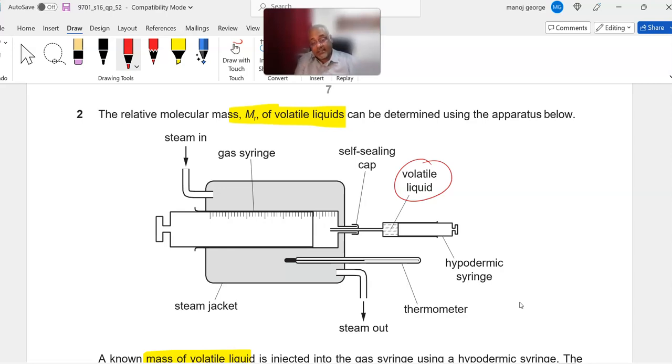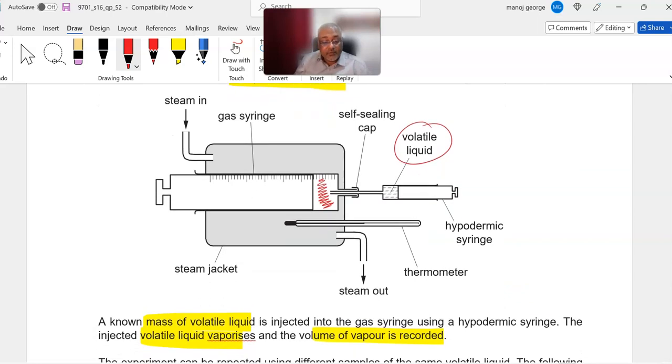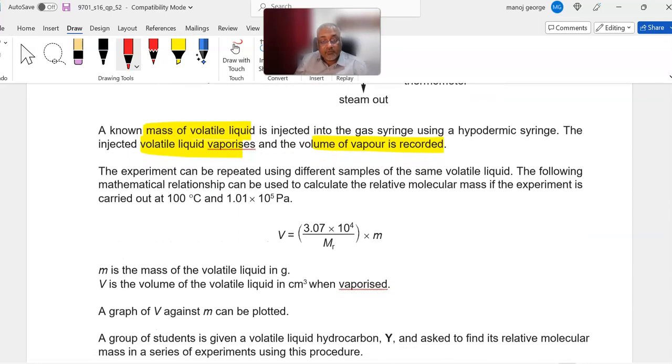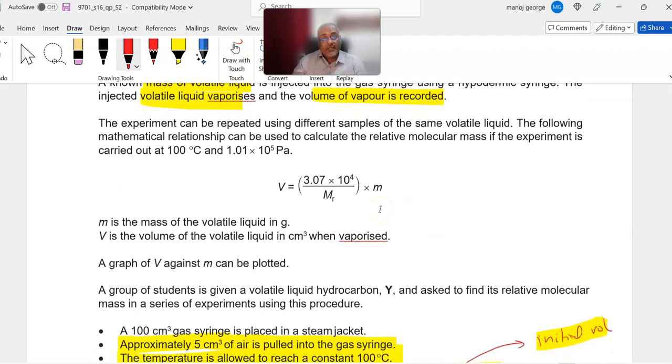Before it is injected, there is some air which is already being pulled in, about 5 cm³ of air. Once the volatile liquid is injected into the syringe, it evaporates into gas and therefore there's an increase in volume. It gives you a formula which could be used to figure out the molecular mass of the unknown gas.